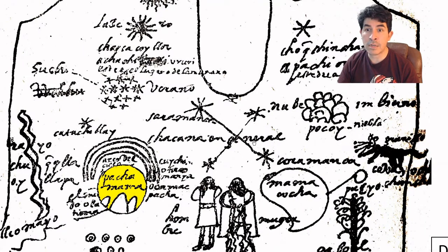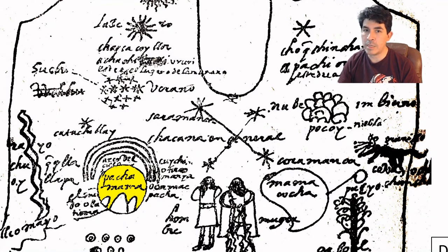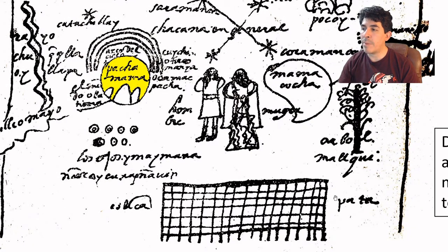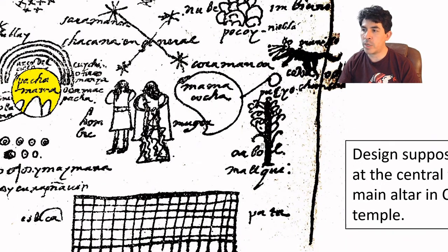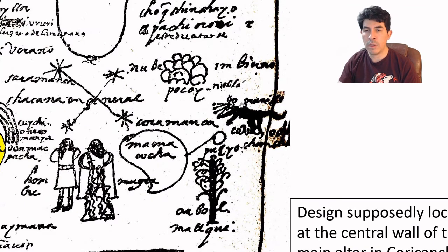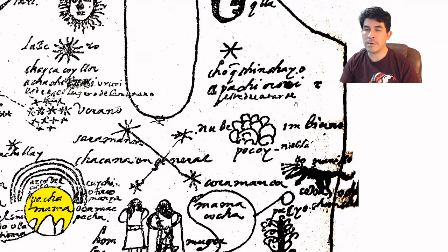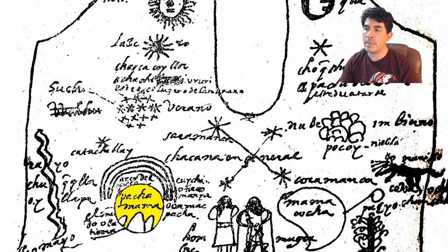The sketch also shows the Chacana stars, seen not as a cross but as two bridges crossing each other. There is a man and a woman, the ocean (Mamacocha), Mother Earth (Pachamama), lightning, a storage terrace called Colcapata, a fruit-bearing tree called Malki, and the Choquechinchay — a small jaguar-like mammal from the Amazon or piedmont region. Atmospheric phenomena are also represented, including hail, rain, and the rainbow.